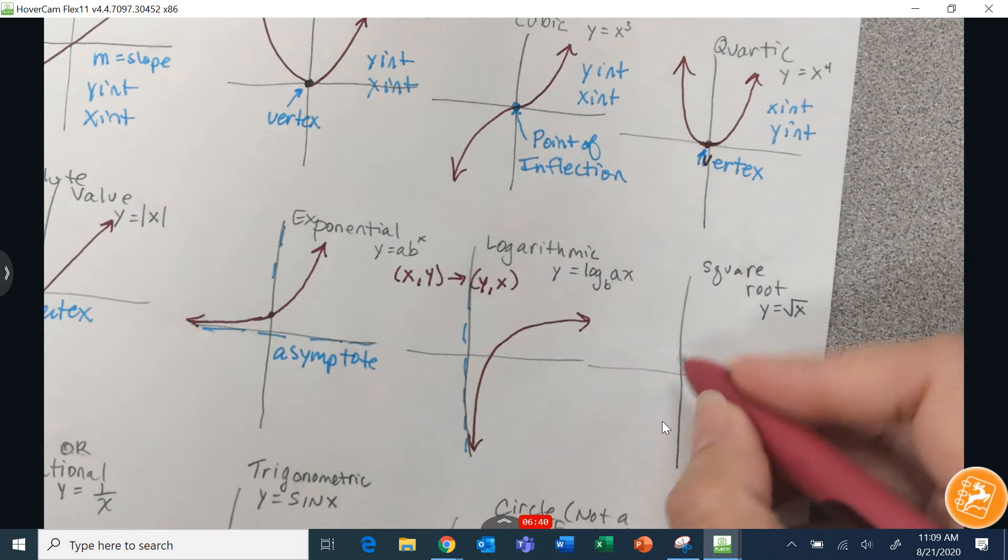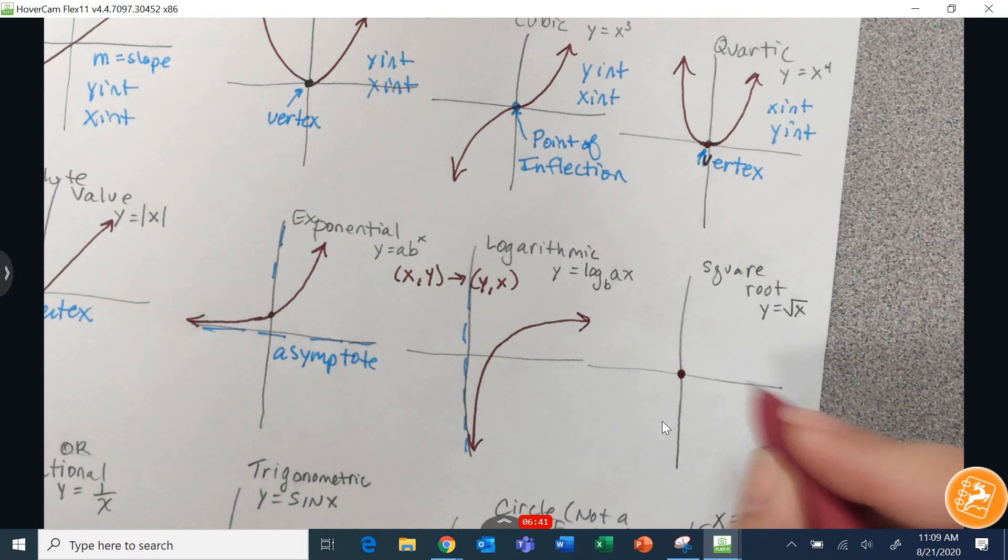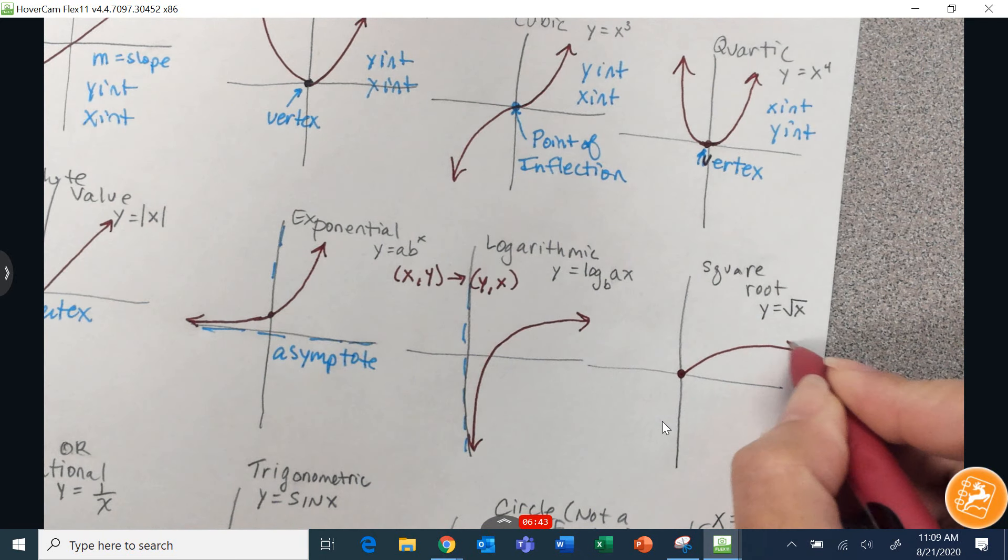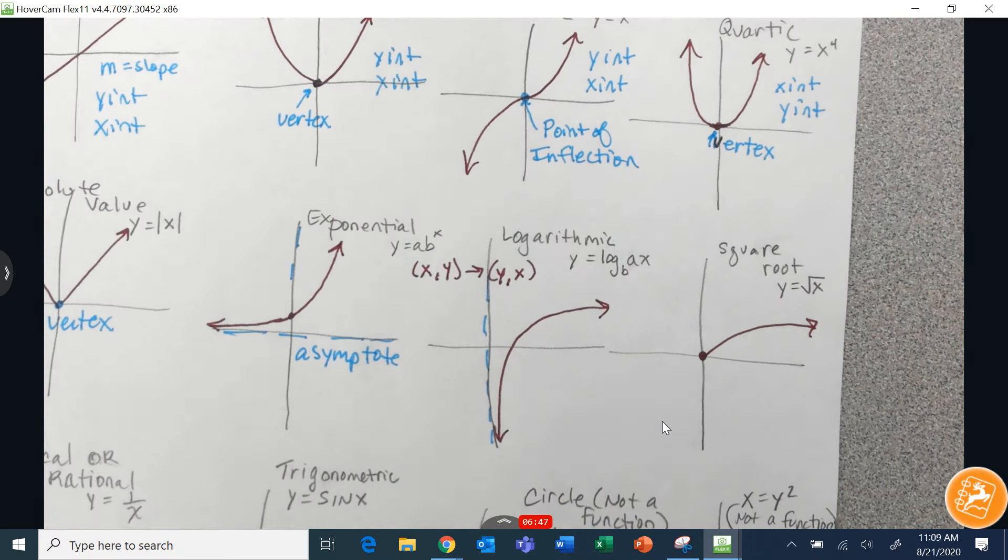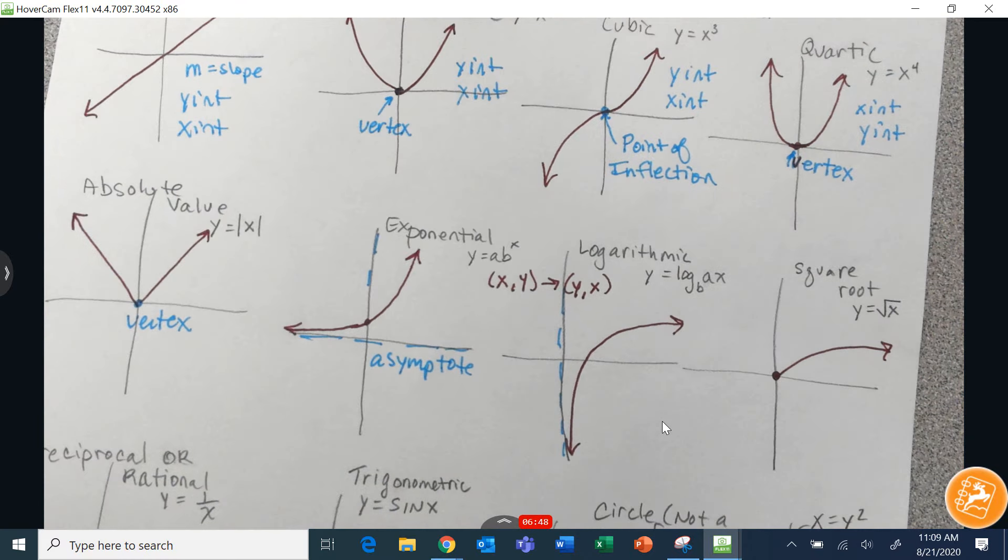All right. Square root. Parent function starts at zero. And it just has this one branch. It does not go in both directions. That one does not have any symmetry.